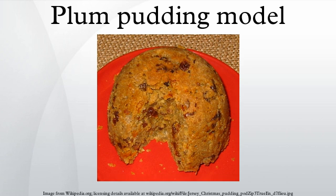The Plum Pudding Model was a model of the atom that incorporated the recently discovered electron, and was proposed by J.J. Thompson in 1904. Thompson had discovered the electron in 1897. The Plum Pudding Model was abandoned after the discovery of the atomic nucleus.